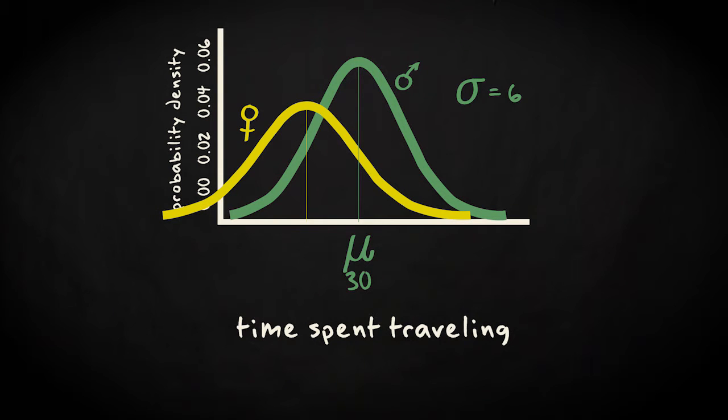And this is the curve for women in the same countries, with a smaller mean but a larger standard deviation. What you see is that the peak gets lower if the curve gets wider.